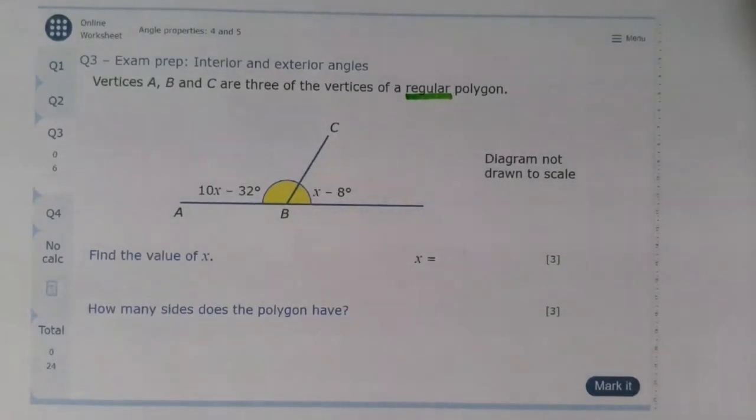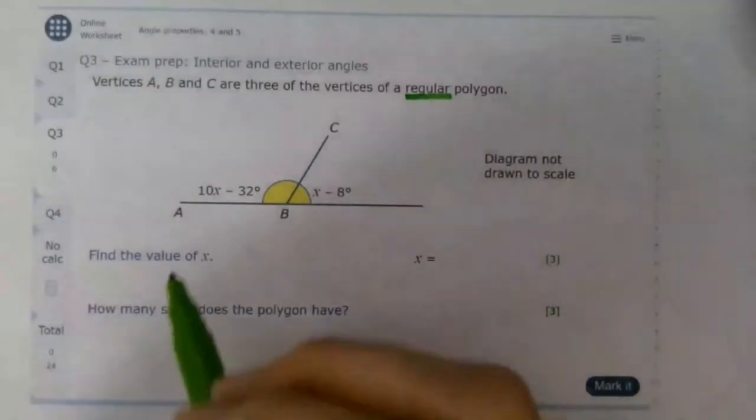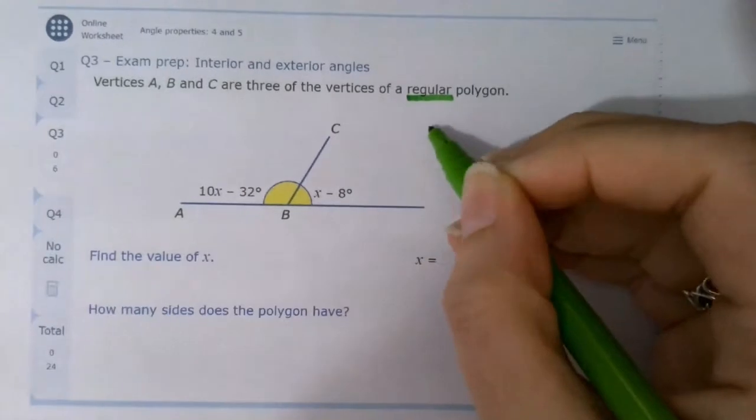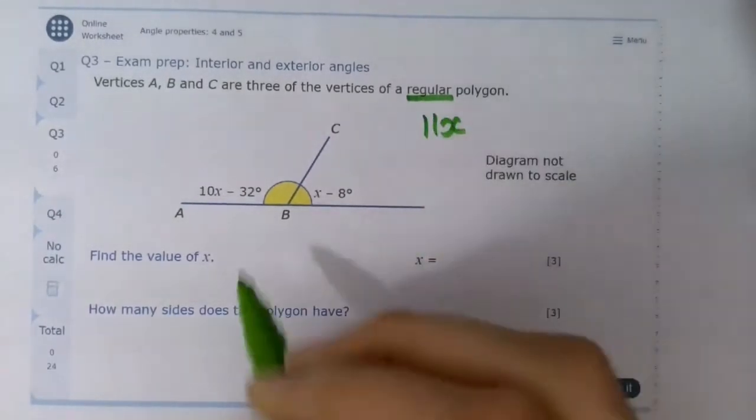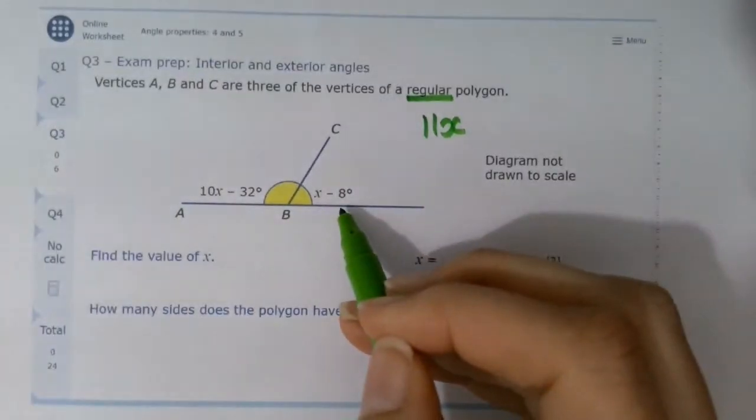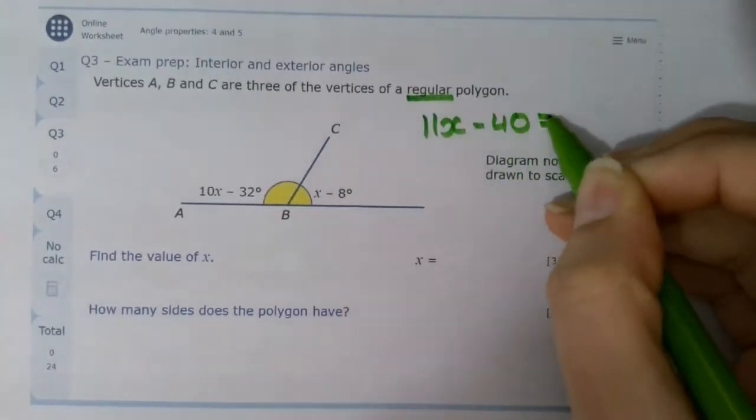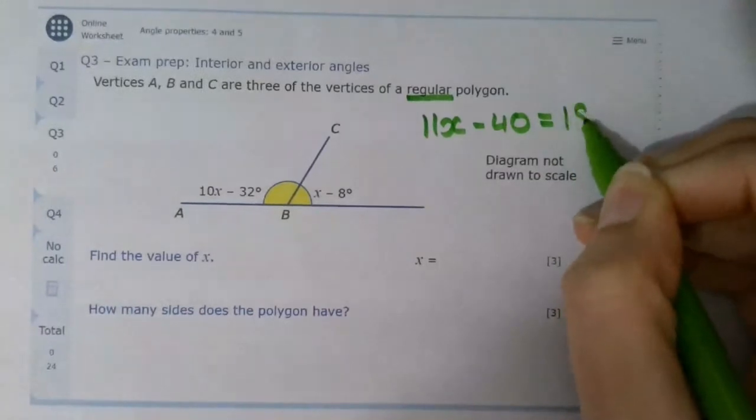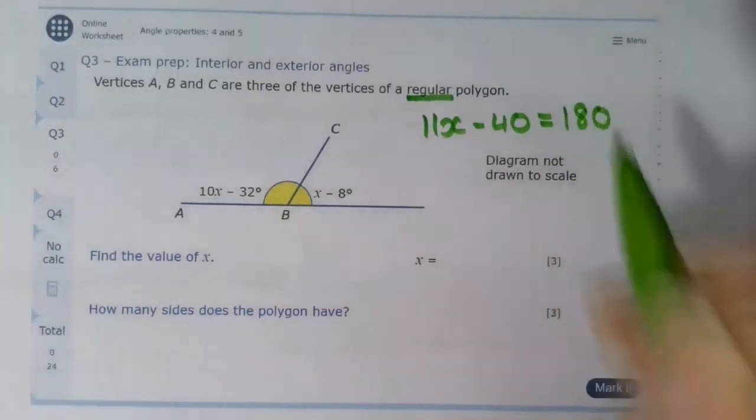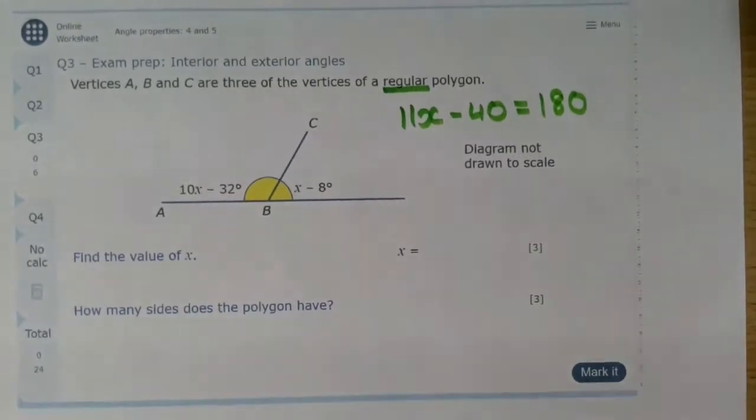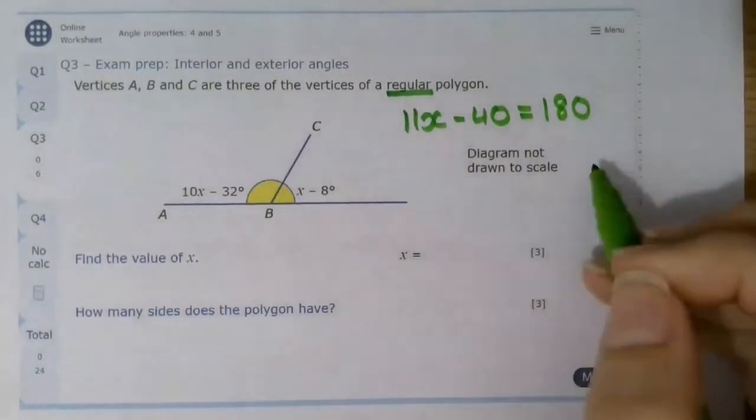So on the left-hand side we have 10x. On the right-hand side we have x, which gives me 11x all together. Then I've got negative 32 and negative 8, which gives me negative 40. And I know that that gives me 180. And I can use that to find out the size of x. X is 20.